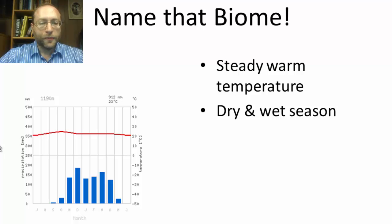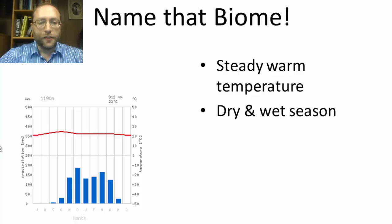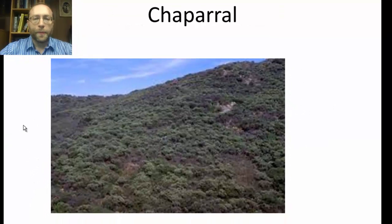Next biome. The temperature stays very steady throughout the whole year — no seasonal fluctuation at all — and it's pretty warm but not too warm. When we look at the precipitation, we've got a definite rainy season where it rains quite a bit, and a dry season where it doesn't rain at all. What biome is that? Chaparral — which is basically what you have in Los Angeles, or also in the Mediterranean region.